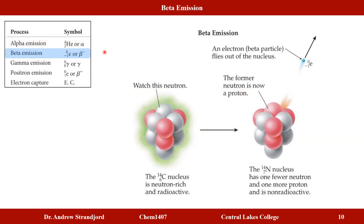Beta emission involves emitting an electron, also called a beta particle. Starting with carbon-14, it undergoes radioactive decay releasing a beta particle. In the process, one of its neutrons is converted into a proton, changing the elemental identity of the atom. Carbon has been converted into nitrogen through beta decay.